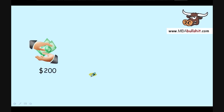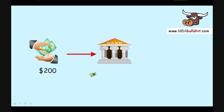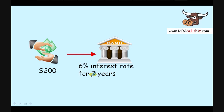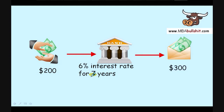Let's say that today I give you $200, and you use this $200 and deposit it in a bank. The bank will give you a 6% interest rate, and you keep your $200 in the bank for seven years.